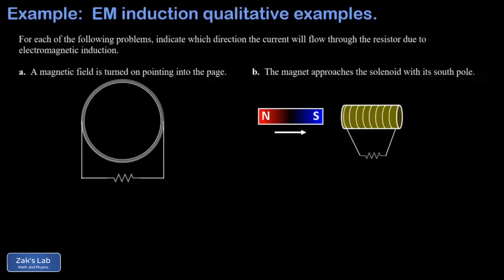In this video we're looking at a couple qualitative examples of electromagnetic induction. As a quick reminder, the way electromagnetic induction works is that a current or at least a potential difference will be induced in a coil in the direction that reduces a change in flux.